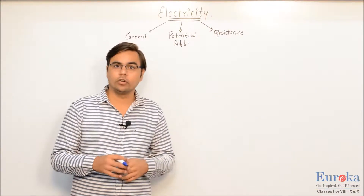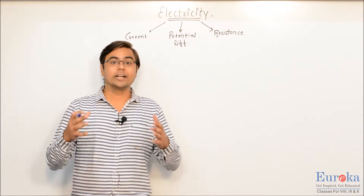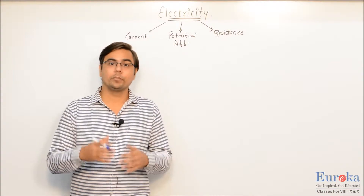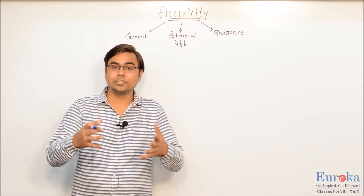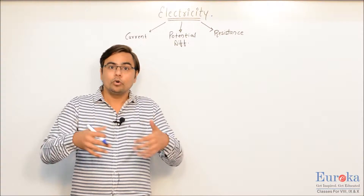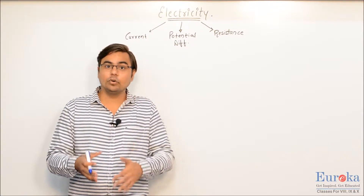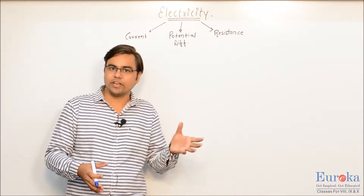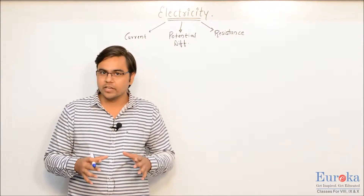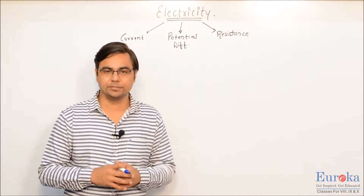If I switch the button on, the bulb in your room starts providing light energy. With the same type of switch pressed on, you can get heat energy from an electric iron. So the output is heat energy or light energy, and we know that only some form of energy can be converted to another. We can conclude that electricity is actually a form of energy.